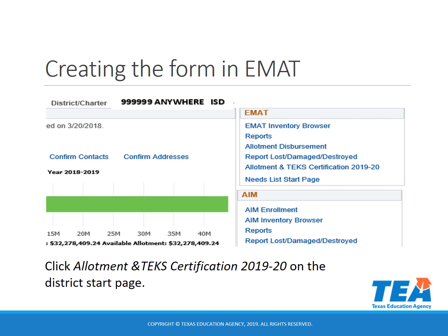The first step in creating the allotment antiques certification in the EMAT system is to click on the allotment antiques certification 2019-20 link that is on the district start page located in the EMAT box.